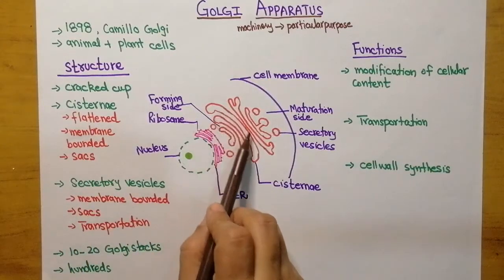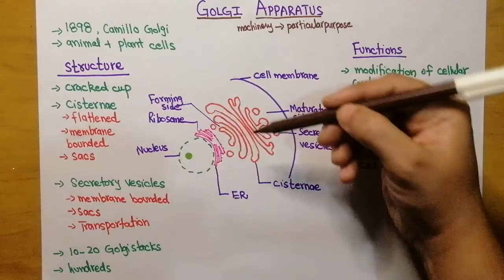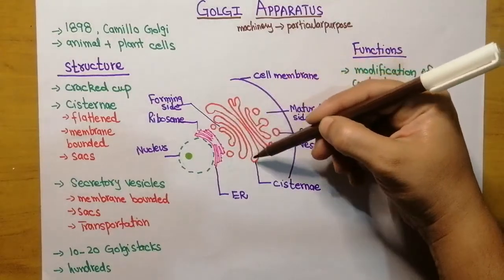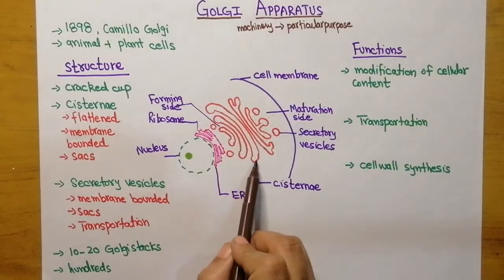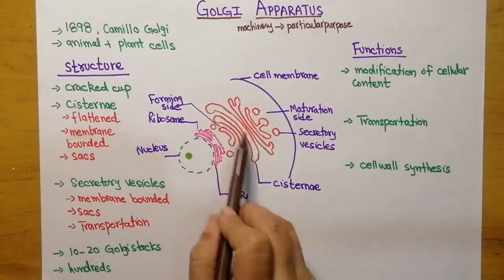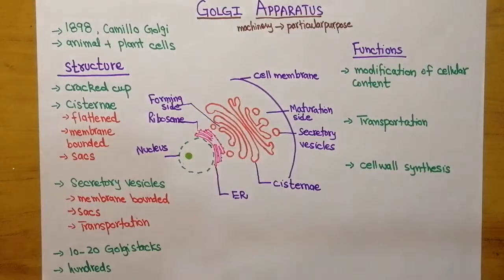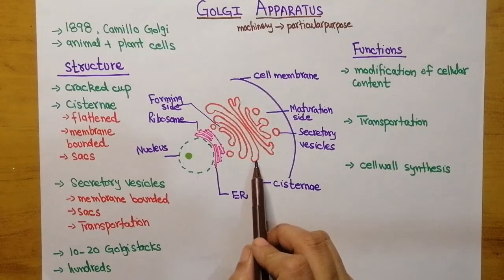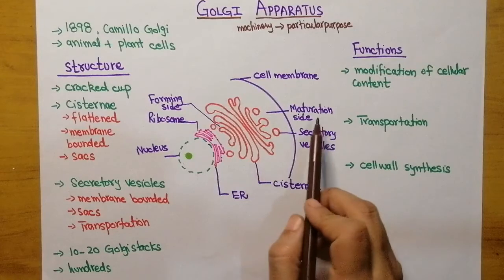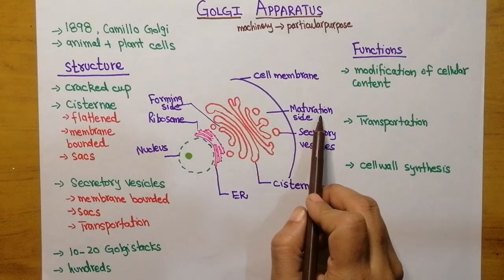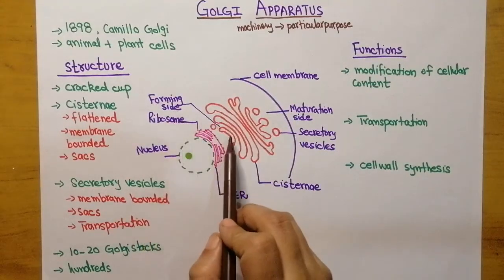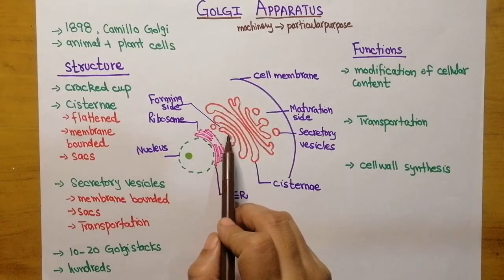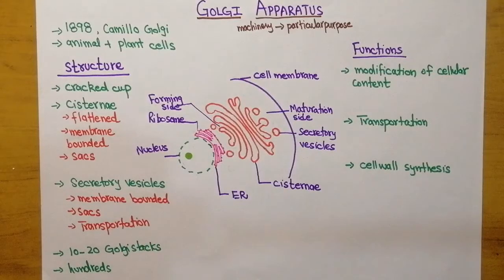Cisternae are actually flattened membrane-bounded sacs. Here you can see that they are flat in structure — they have a membrane and they are sacs. These cisternae form two faces: one is the maturation side and the other is the forming side. The forming side is also known as the cis side.